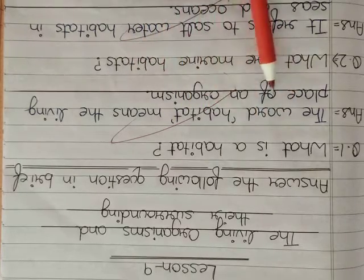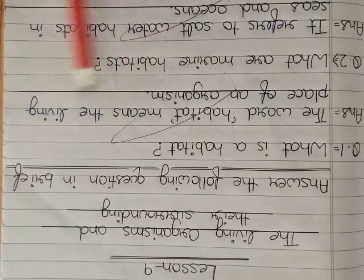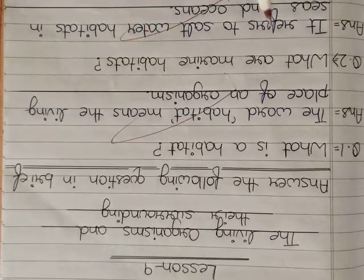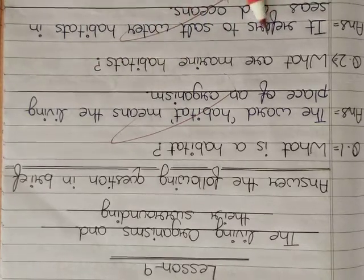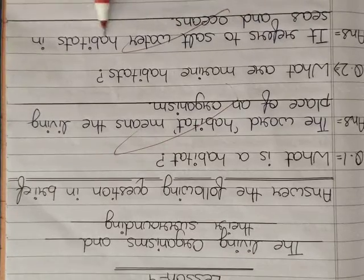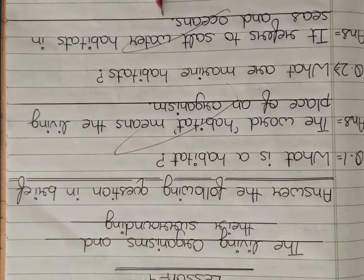What is a habitat? The word habitat means the living place of an organism. What are marine habitats? It refers to salt water habitat in seas and oceans.